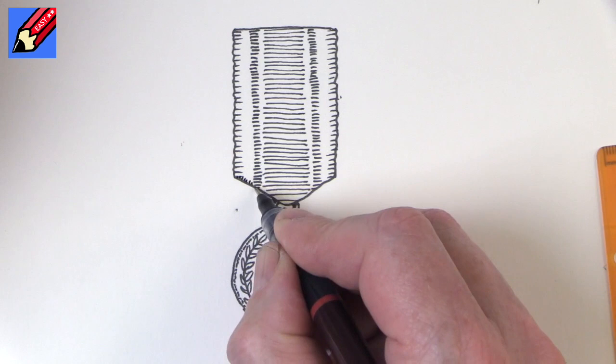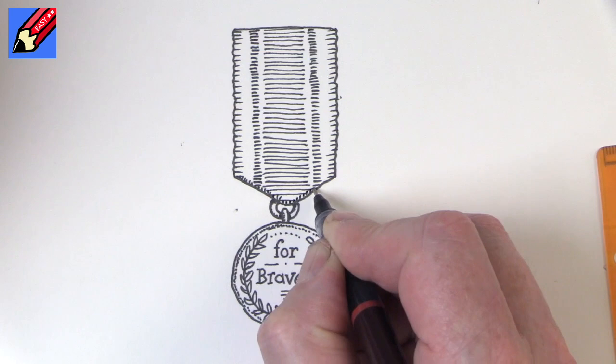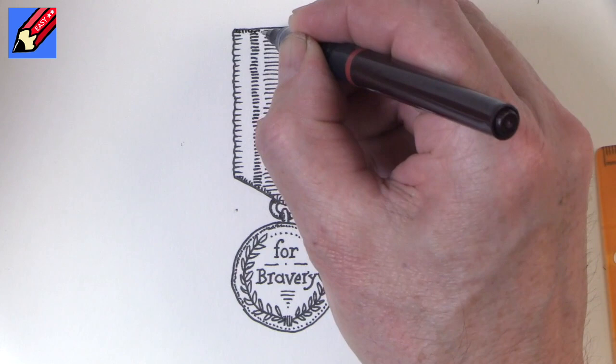And then we're going to want a little bit of shade at the bottom of the ribbon, just going up there like that. And maybe just a little bit up at the top as well where it is folded over.